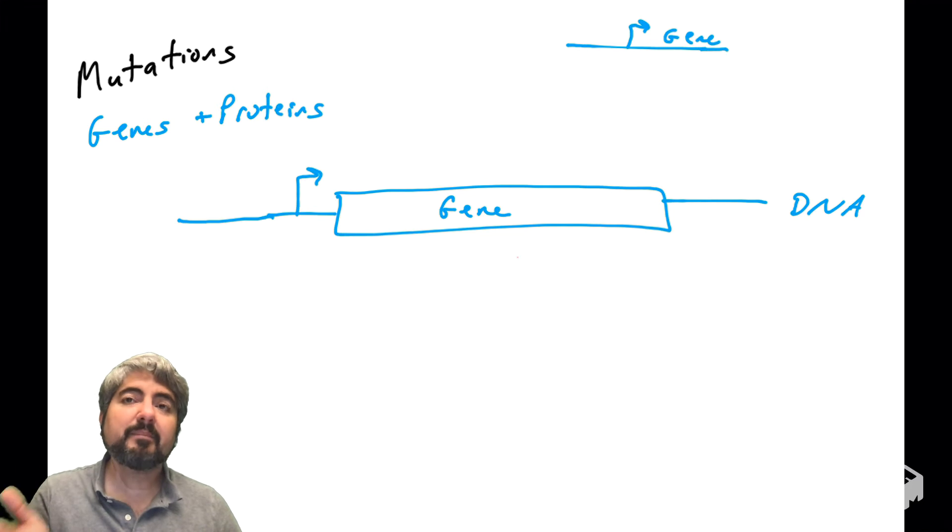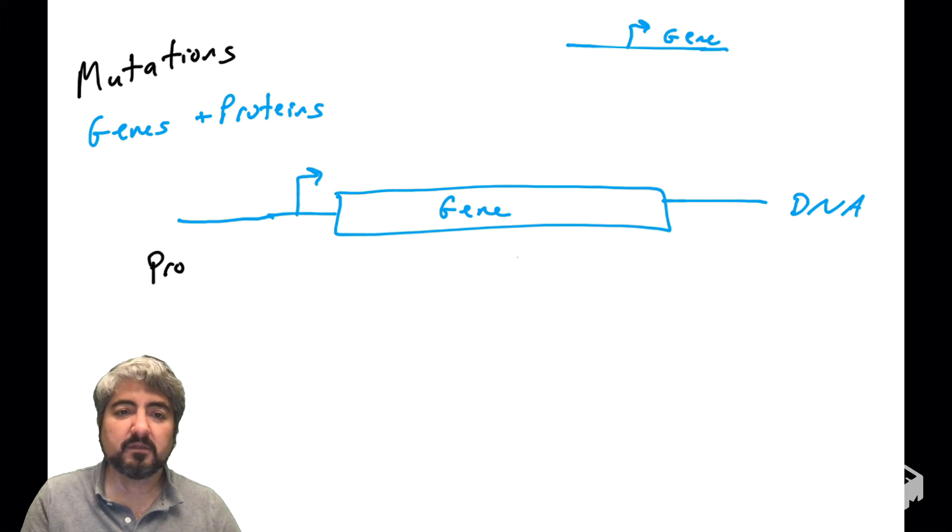What is upstream of the gene? What is the nucleotide region upstream of the gene that helps control gene expression or gene activation or gene transcription? It is called, starts with a P, the promoter region, right?